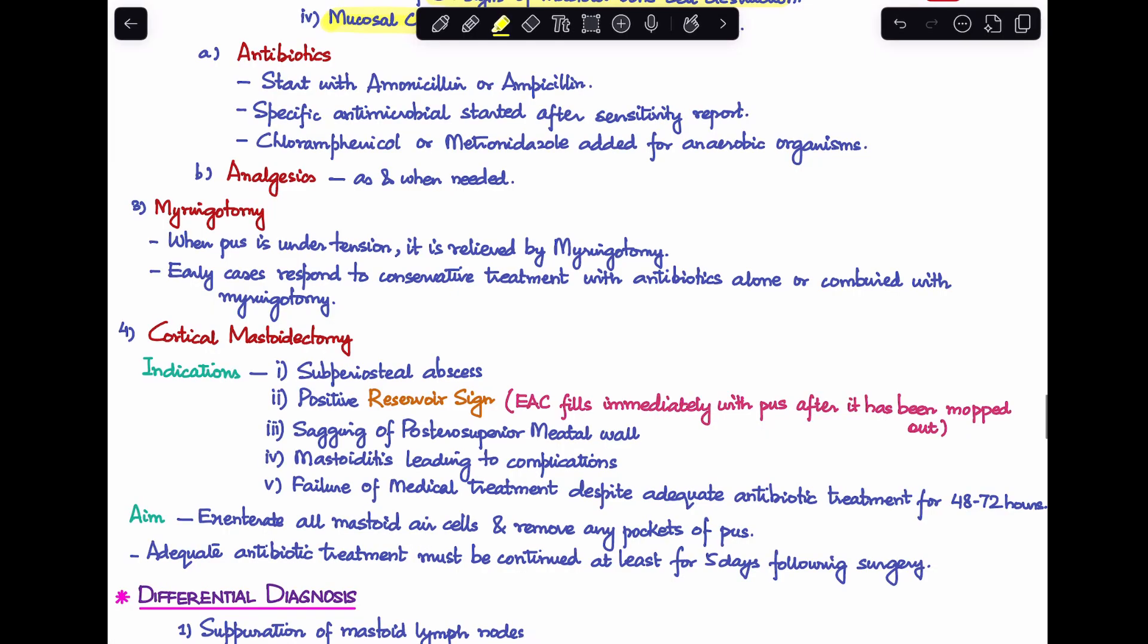Next treatment is myringotomy. When do we do myringotomy? When the pus is under tension, we relieve it by myringotomy. Very early cases respond to conservative treatment with antibiotics alone or combined with myringotomy.